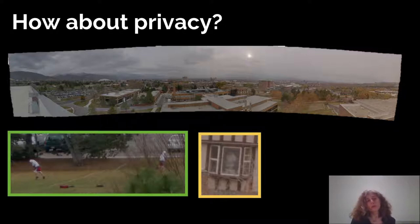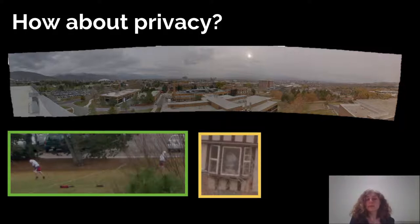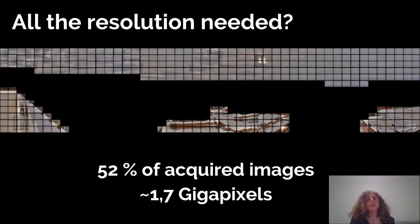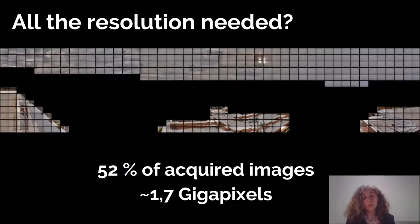Those two parts solve the problems we've seen. But what about privacy? You're taking images of everything — people in their homes or playing outside — pictures you don't want to have and they don't want you to have. There's also a question of whether you need this resolution everywhere, since you're uniformly acquiring images of skies, bricks, and rocks. In fact, 52% of your acquisition images are on things not really of interest, and 1.7 gigapixels are used for computation you don't really need, making the whole process very slow.